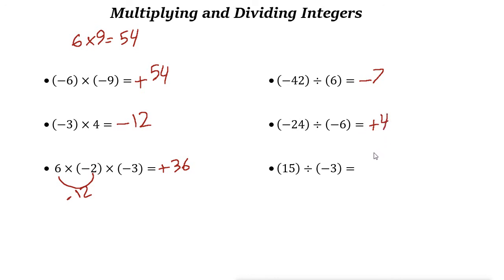Again, positive divided by negative, or negative divided by positive — both give a negative result. For example, 15 divided by negative 3 is negative 5.